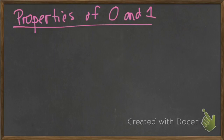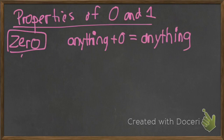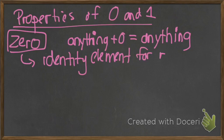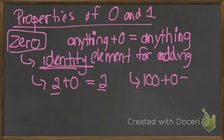When we talk about the number 0, it has a lot of important properties for both multiplying and adding. We know that if we do anything plus 0, it equals that anything. This is called the identity element for adding. The word 'identity' is used because it literally doesn't change anything about the identity of any number: 2 plus 0 is 2, and 100 plus 0 is 100. It doesn't change anything.